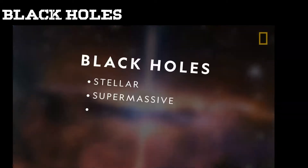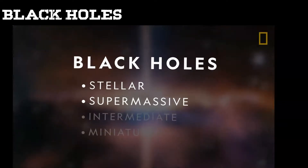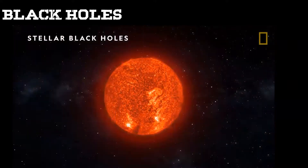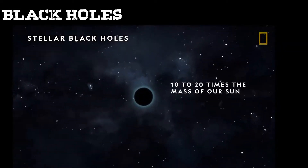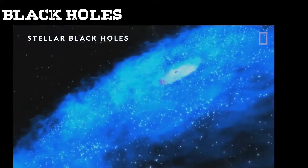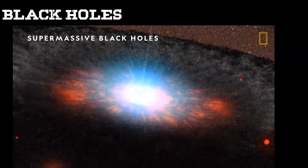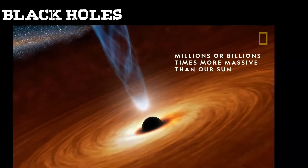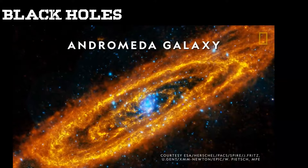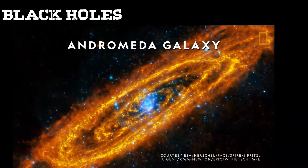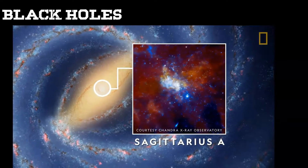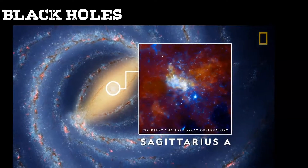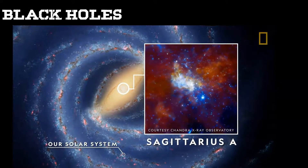Scientists have theorized several types of black holes. Stellar black holes form when massive stars die and collapse — roughly 10 to 20 times the mass of our sun, scattered throughout the universe; there could be millions in the Milky Way alone. Supermassive black holes are giants by comparison — millions or even billions of times more massive than our sun. We know they exist at the center of just about every large galaxy, including our own. Sagittarius A*, the supermassive black hole at the center of the Milky Way, has a mass of roughly 4 million suns and a diameter about the distance between Earth and the sun.